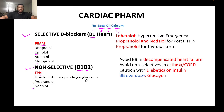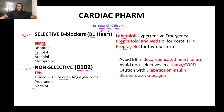Timolol is used as an eye drop for acute angle-closure glaucoma. Labetalol is used for hypertensive emergency. Propranolol and nadolol are used for portal hypertension in someone with liver cirrhosis who is at risk of bleeding or is actively bleeding. Propranolol is also used for thyroid storm — it inhibits 5'-deiodinase, preventing conversion of T4 to T3, and also blocks thyroid hormone receptors on various organs.